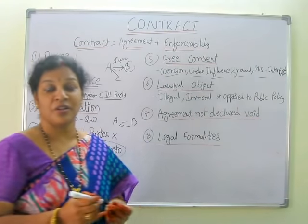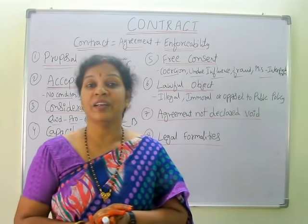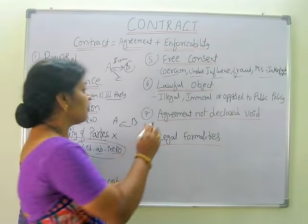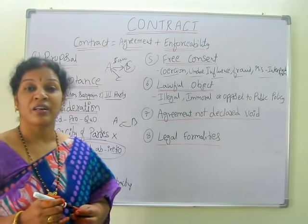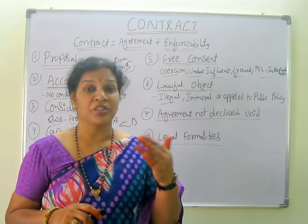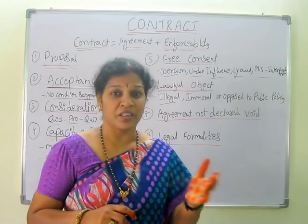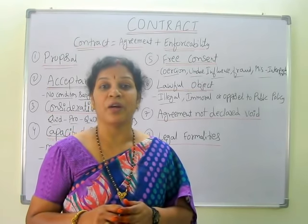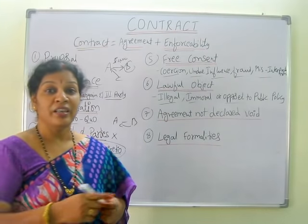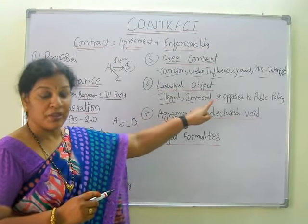Then, the sixth feature is lawful object. A contract will become valid when the agreement is lawfully executable with no objection. When there are no illegal aspects — illegal transactions like smuggling, goods restricted by the government, distributing addictive drugs — any kind of illegal activity will not be accepted by the law. This is illegal, immoral, and opposed to public policy. Any of these things are not acceptable by the government and are not valid. So, a lawful object should be there.